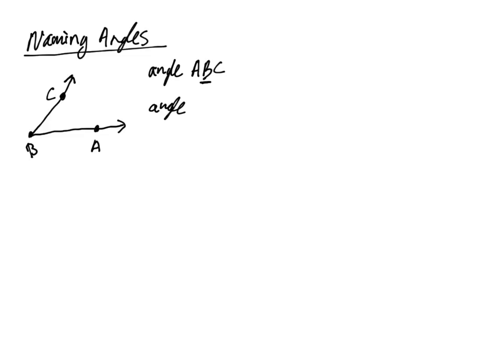Just as easily, we could have named this angle CBA — as long as B is in the middle. Instead of writing the word 'angle,' we can use the little angle notation symbol. So, angle ABC. Or we could call this angle B. When we just have one angle, we can name that angle by its vertex alone.